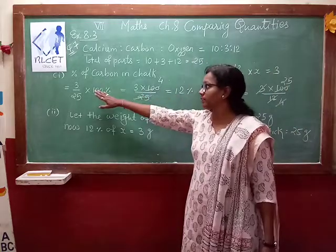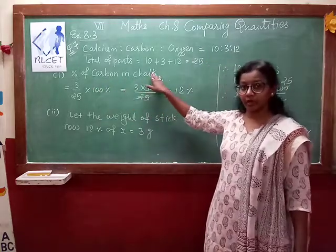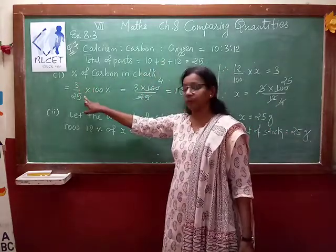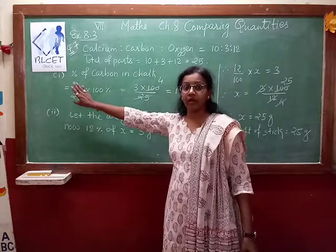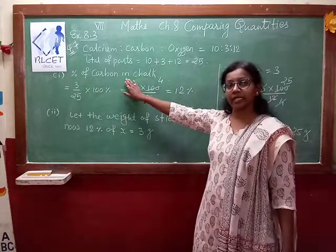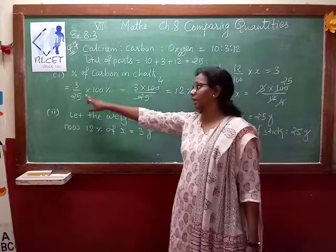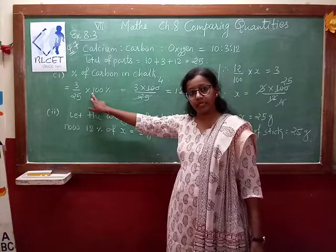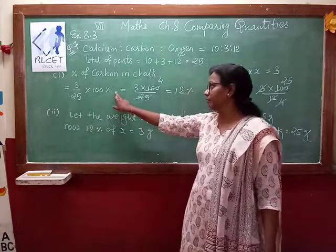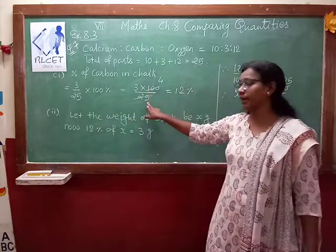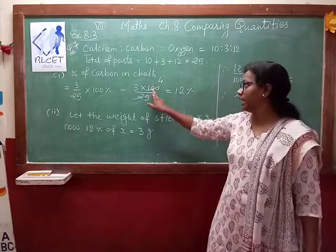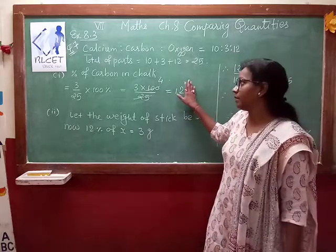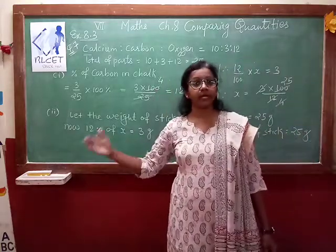Now, the first part — percentage of carbon in chalk that we want to find. The ratio for carbon is 3 out of 25. So 3 divided by 25 is the fraction. Now we have to convert that into percentage, so multiply by 100 percent. 3 into 100 divided by 25 — 25 fours are 100 and 3 fours are 12. So the answer is 12 percent. 12 percent is the carbon present in the chalk.